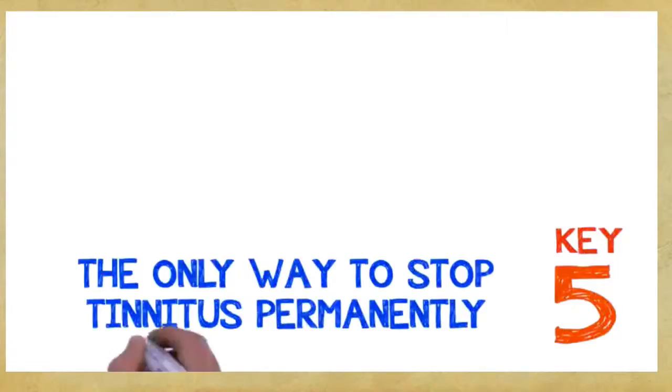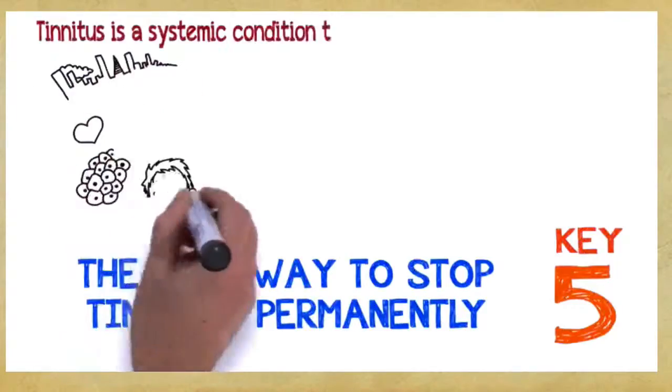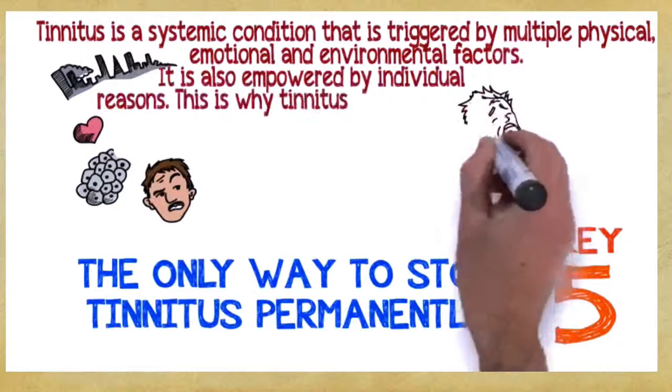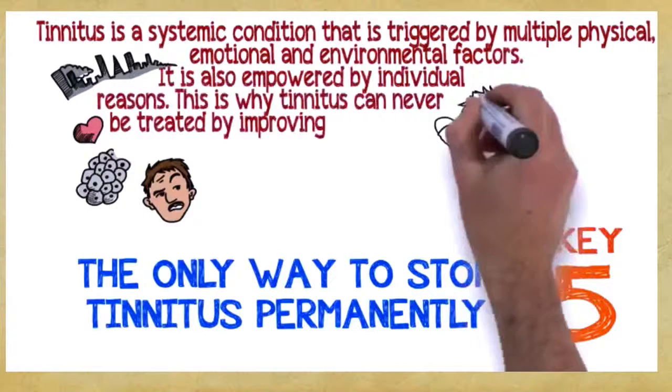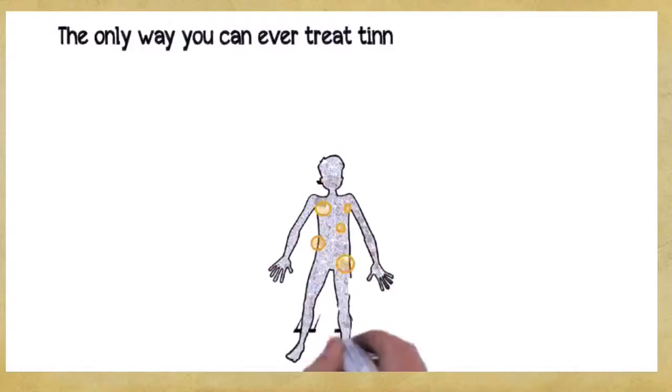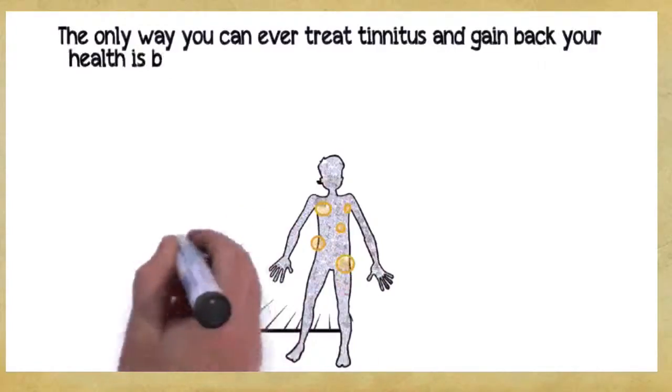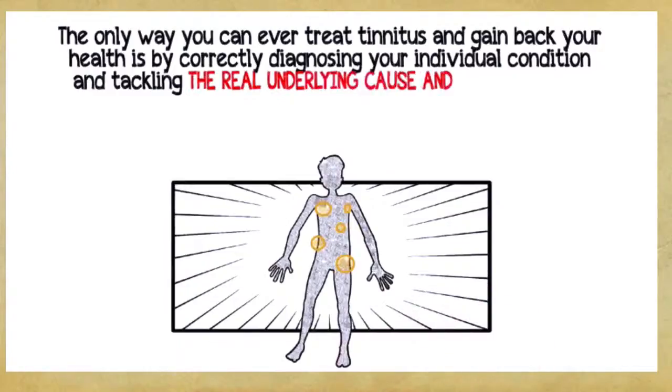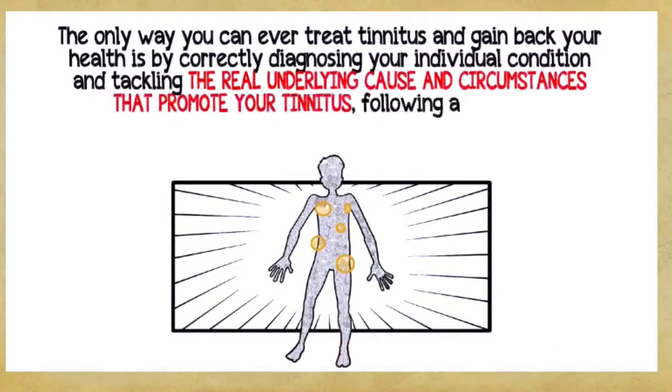Key number five: The Only Way to Stop Tinnitus Permanently. Tinnitus is a systemic condition that is triggered by multiple physical, emotional, and environmental factors. It's also empowered by individual reasons. This is why tinnitus can never be treated by improving circulation, using muscle relaxers, masking the noise, or cutting a nerve in your auditory system. The only way you can ever treat tinnitus and gain back your health is by correctly diagnosing your individual condition and tackling the real underlying cause and circumstances that promote your tinnitus, following a complete, multi-dimensional, holistic program.